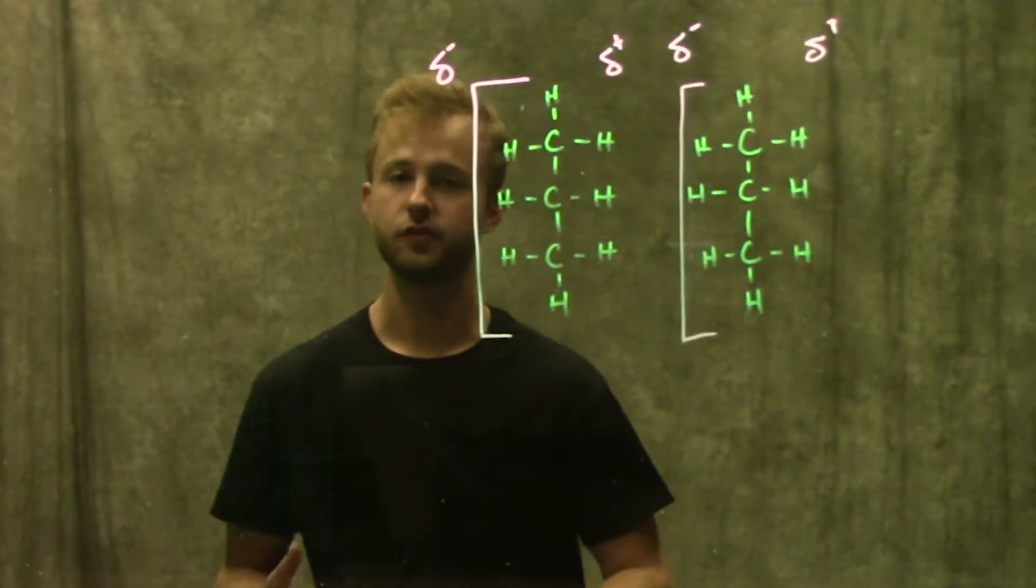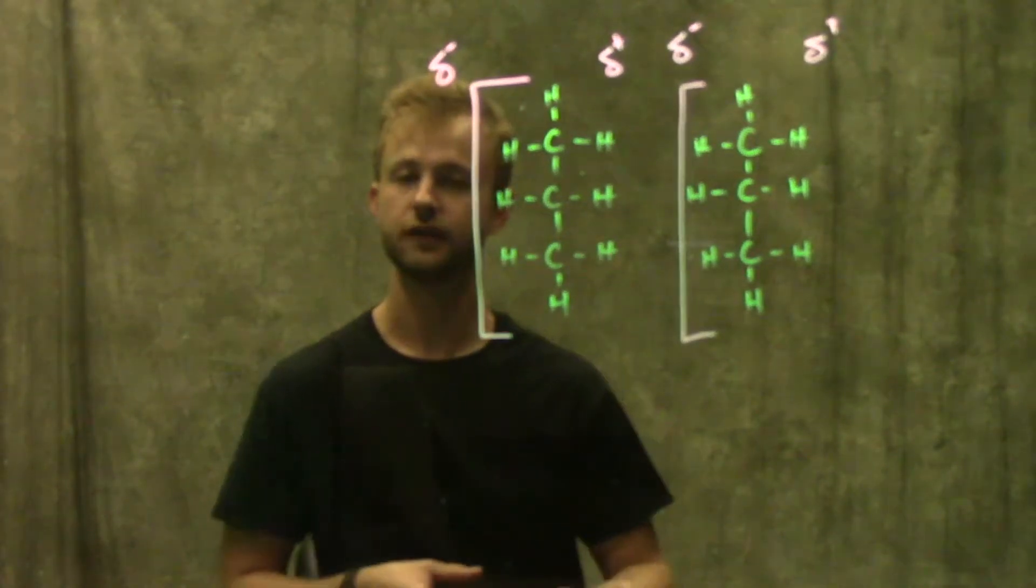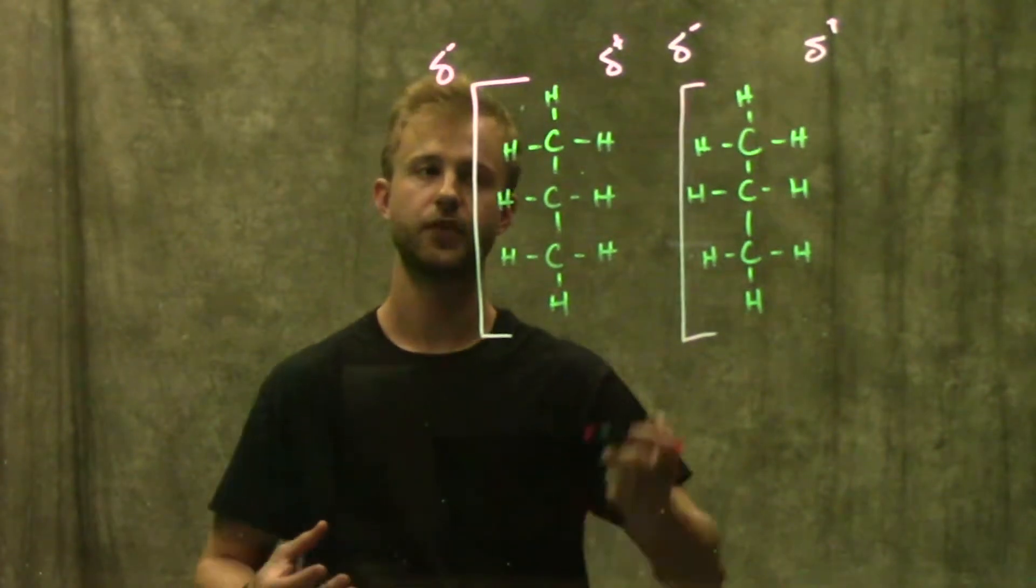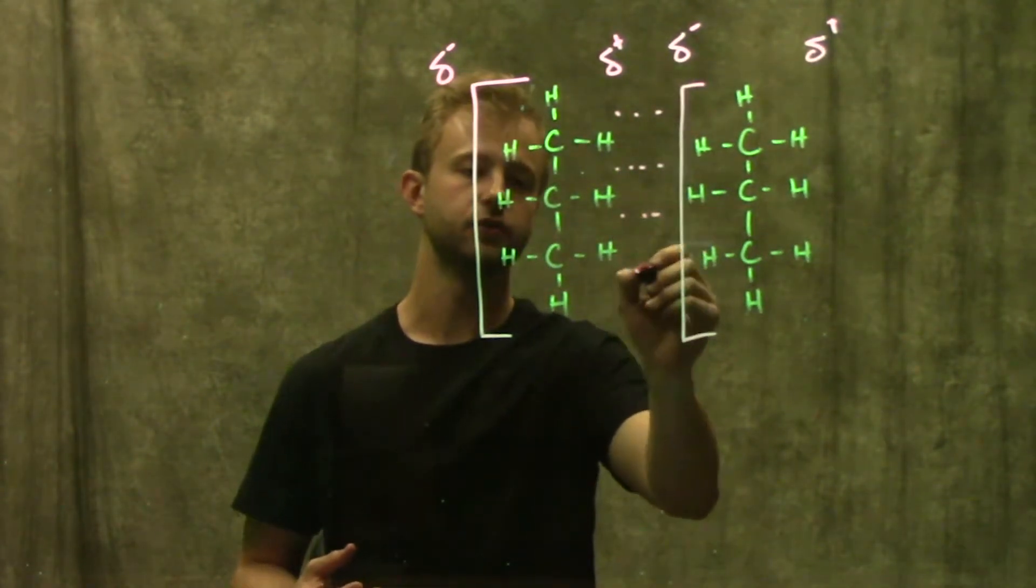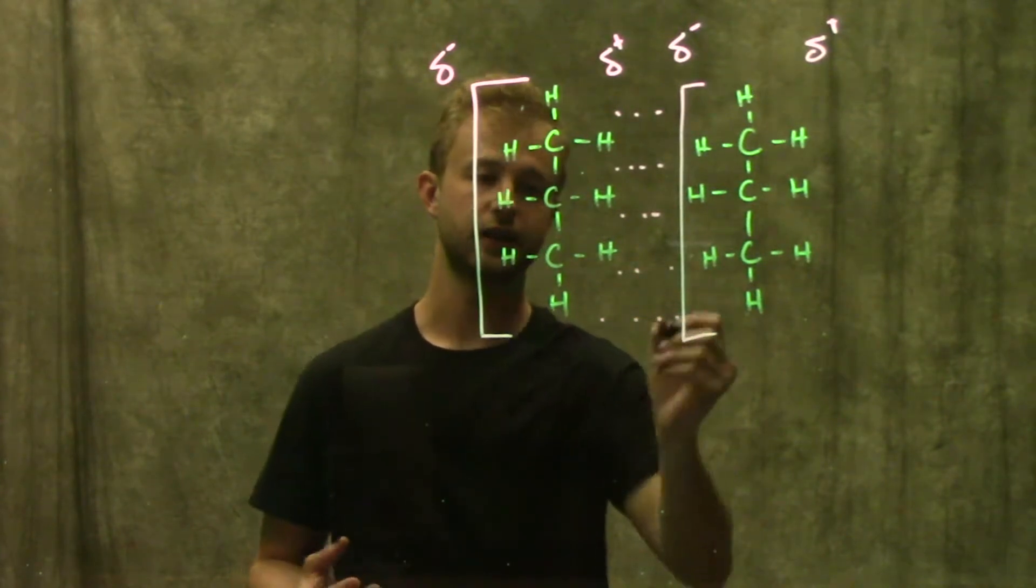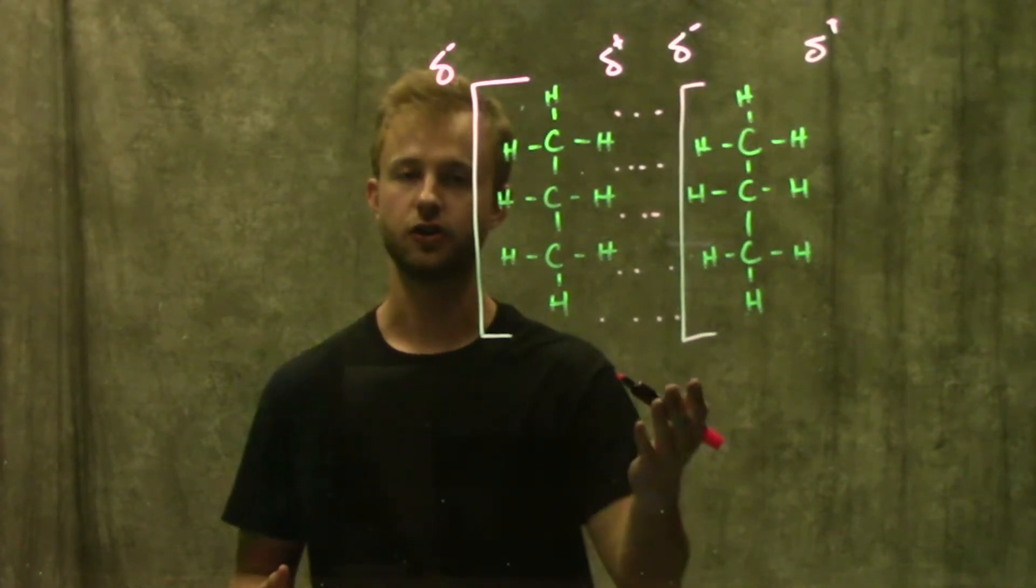Now when that happens, we know that partial positive charges and partial negative charges are going to be attracted to one another. So now the two sides of these molecules have a way that they can interact with each other because they have a different charge.